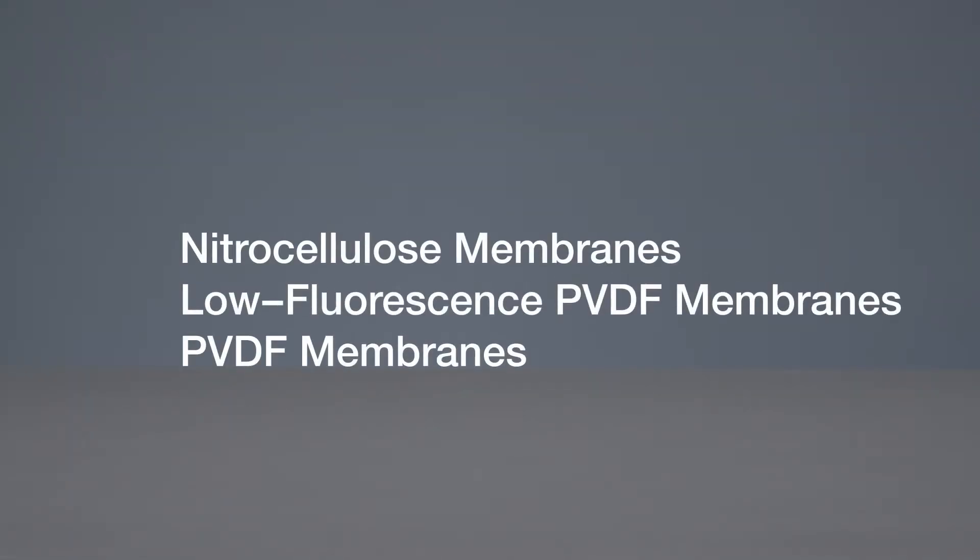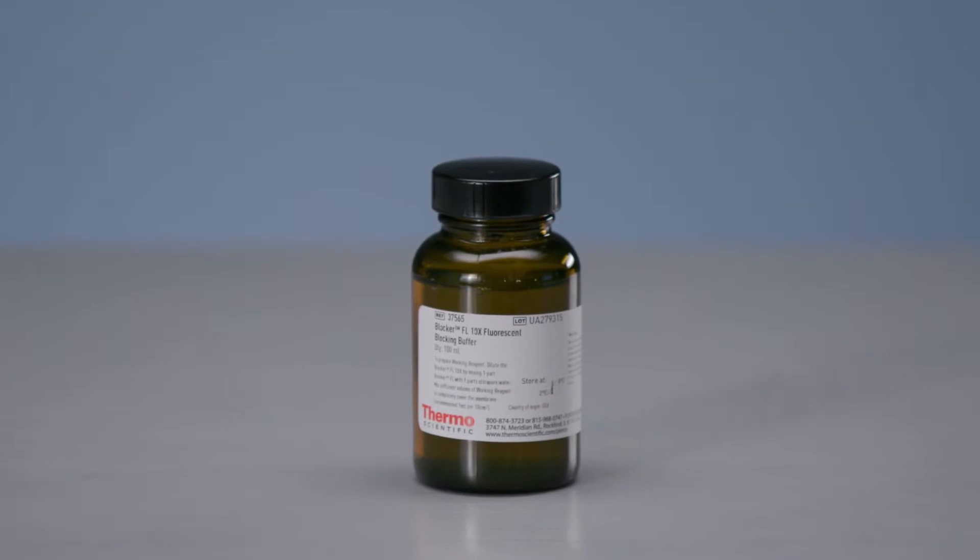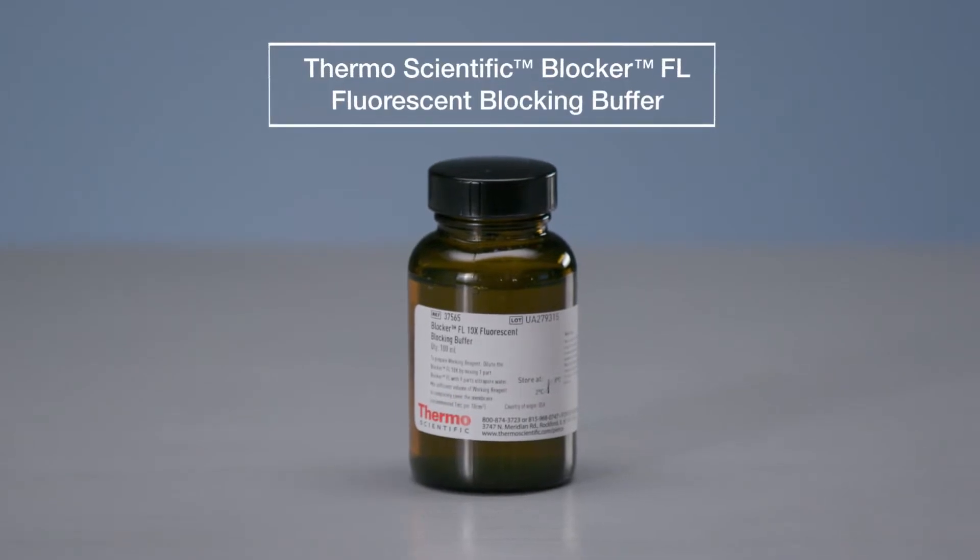To eliminate a major source of background fluorescence, use membranes with low autofluorescence such as nitrocellulose and low fluorescence PVDF membranes. Additionally, particles and contaminants in blocking and wash buffers can settle on membranes and create fluorescent artifacts. Use high-quality filtered buffers such as Thermo Scientific Blocker FL fluorescent blocking buffer.